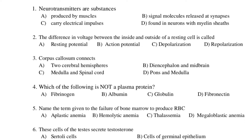Fourth question: Which of the following is not a plasma protein? A. Fibrinogen. B. Albumin. C. Globulin. D. Fibronectin.